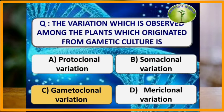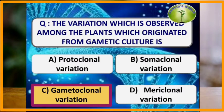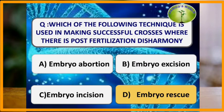The variation observed among plants originated from gametic culture is called gametoclonal variation. The variation found in plants regenerated from callous cultures of somatic plants such as meristems is somaclonal variation. The variation observed in plants regenerated from callous culture of protoplast is known as protoclonal variation.